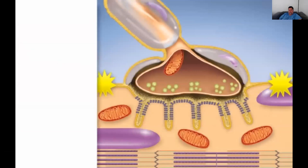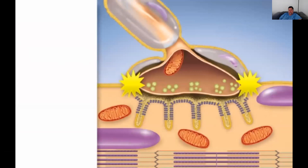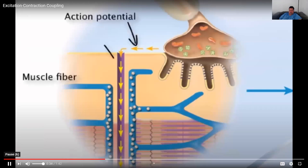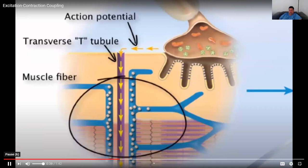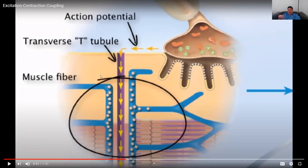A wave of action potential spreads from the motor end plate in all directions, similar to ripples on a pond when a stone is thrown. When this wave of excitation reaches the transverse tubules, or T-tubules, it continues down them into the sarcoplasm. The transverse tubules are simply the cell membrane coming internally inside the muscle fiber. Sodium is coming into the cell during an action potential — it was outside the cell to begin with, as cells live in a saline-like solution.